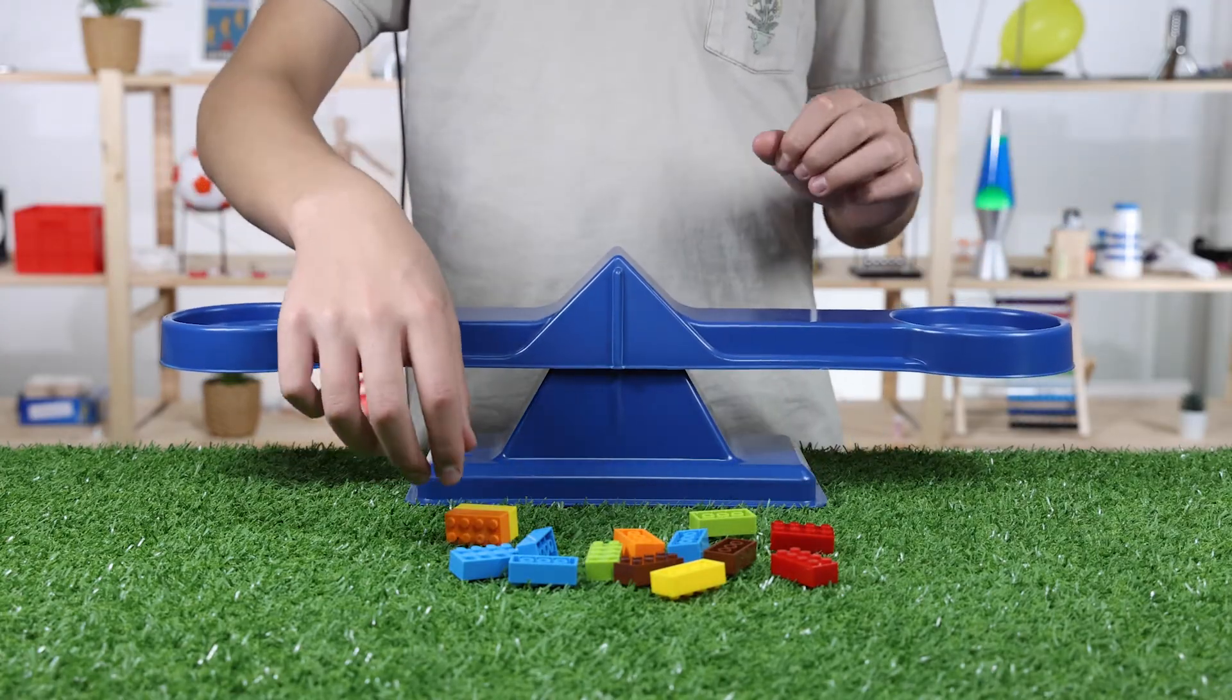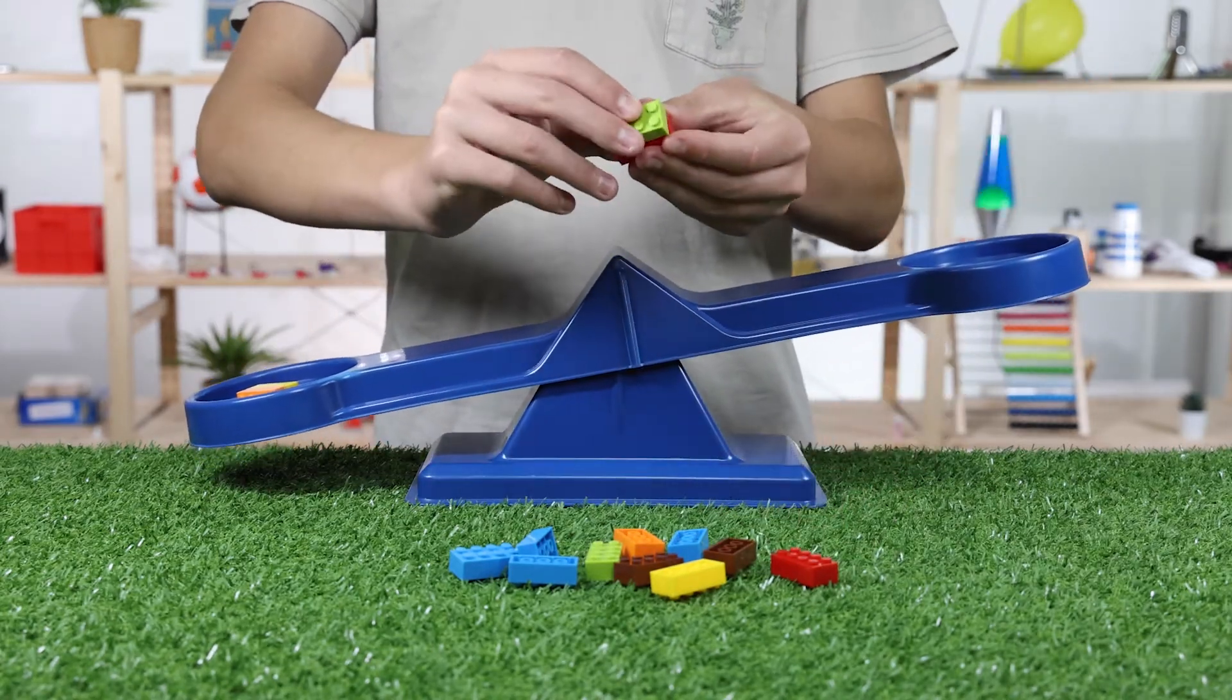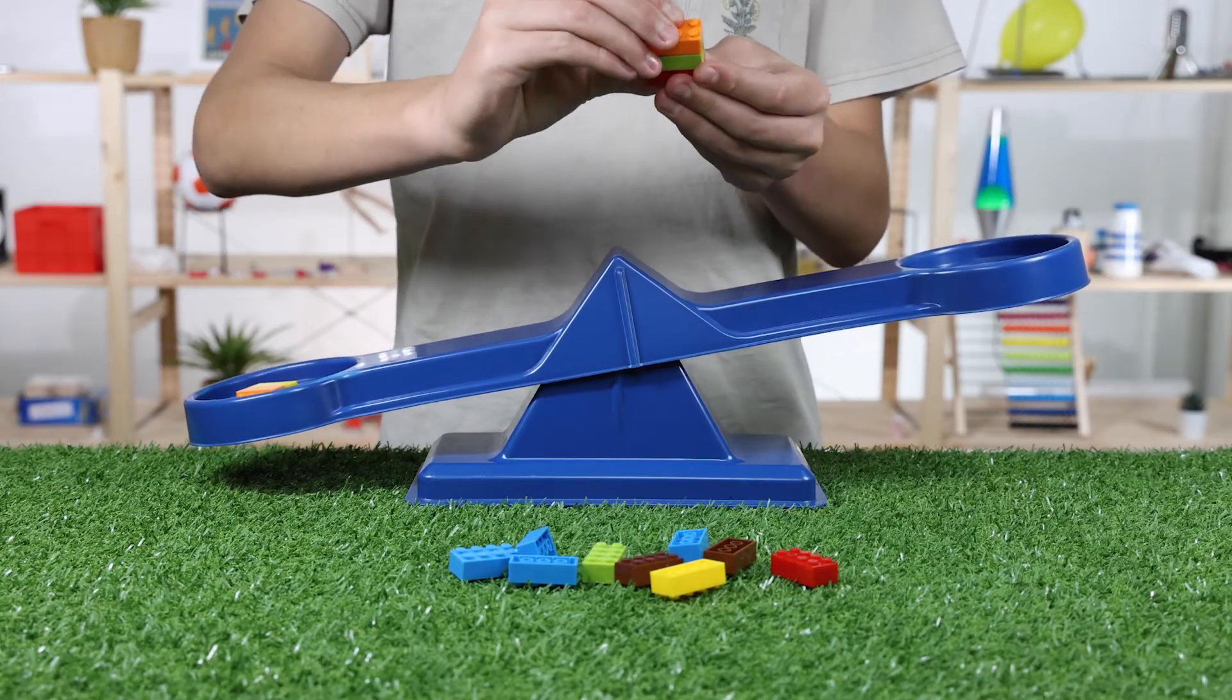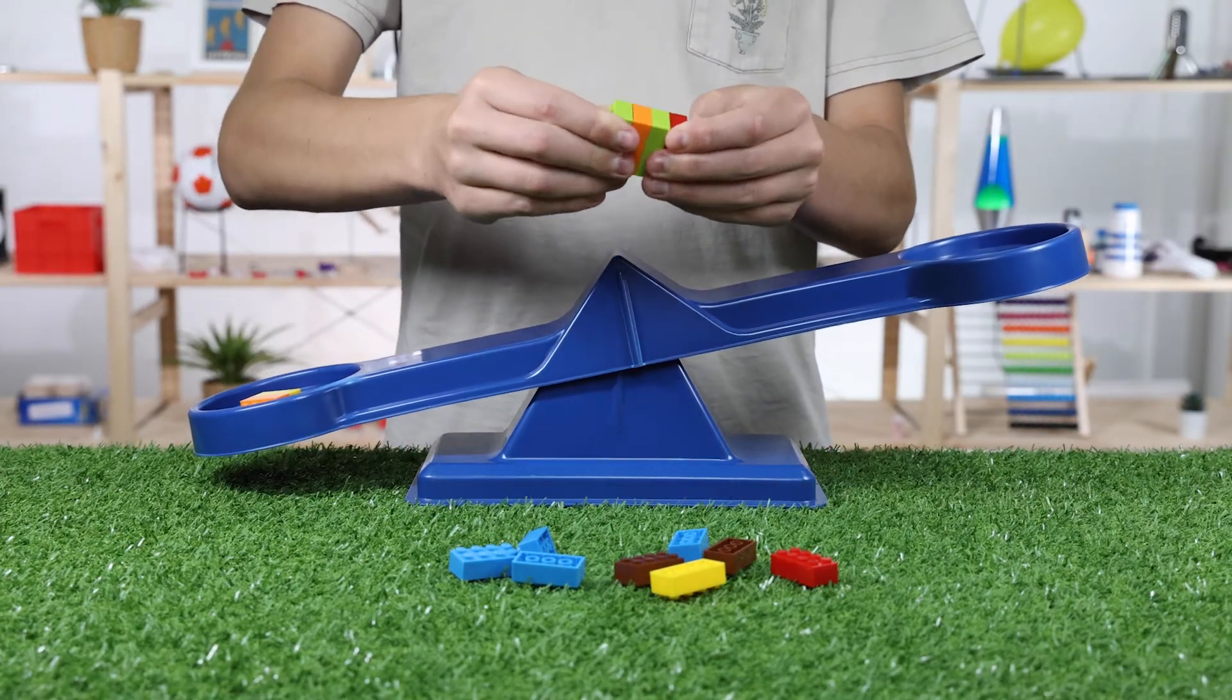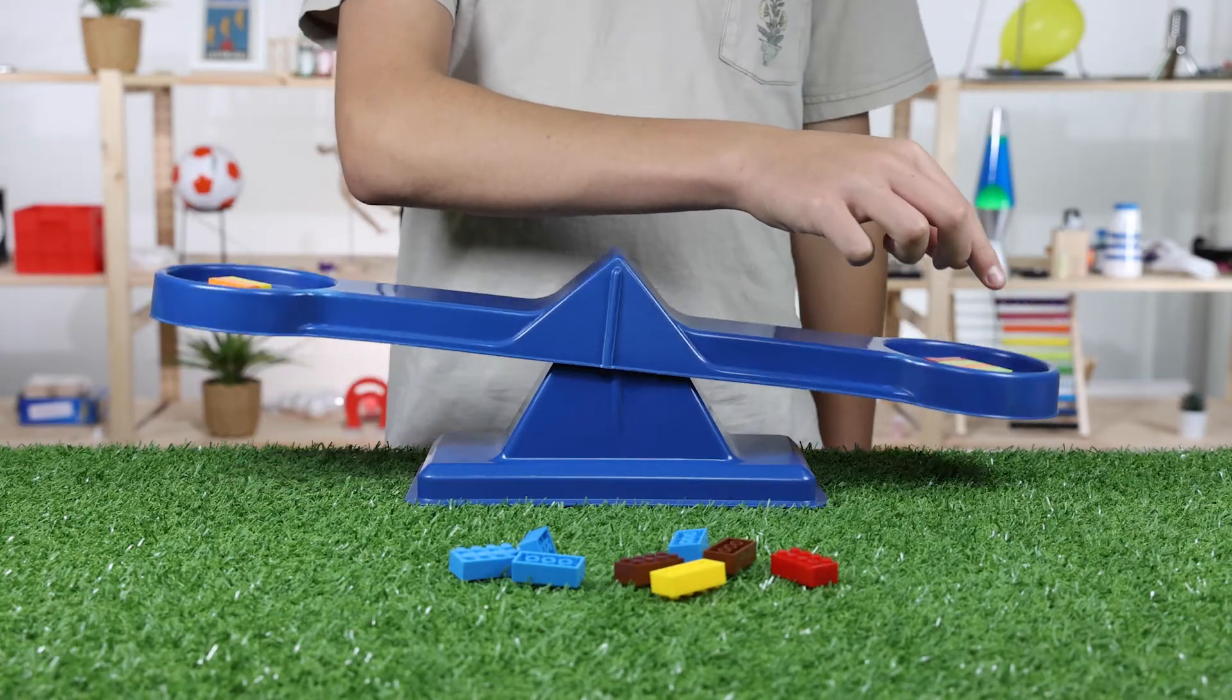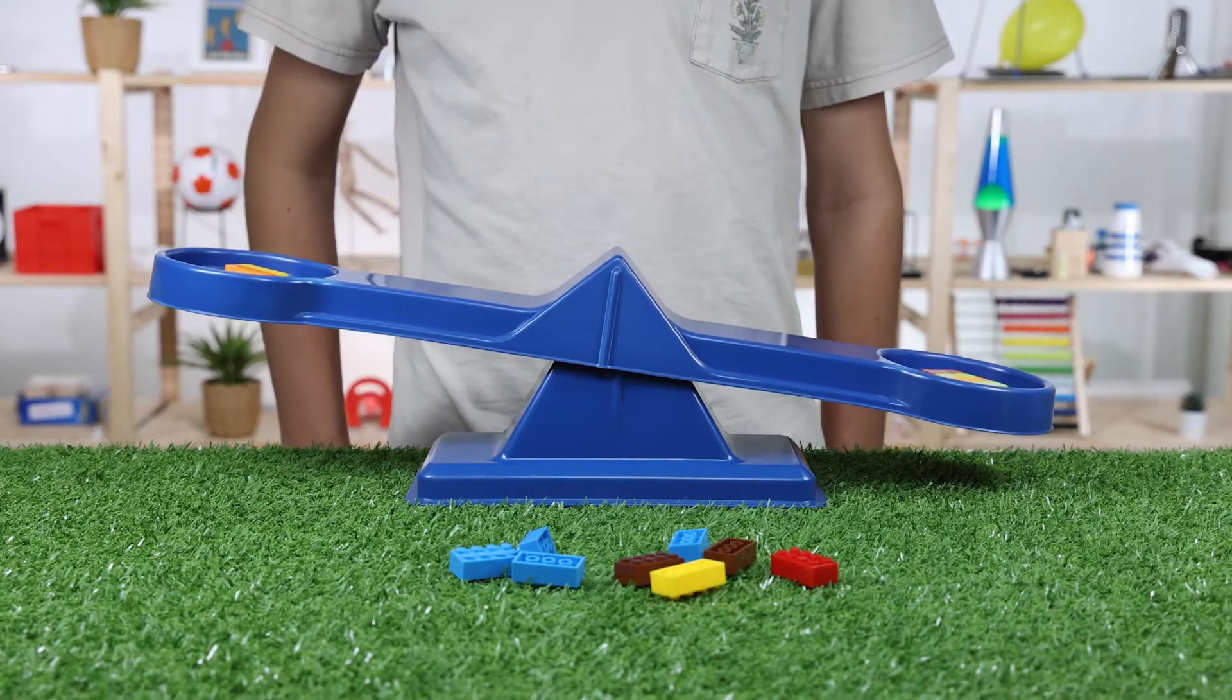Now let's put two blocks on one side of the balance and put four blocks on the other side. Four blocks has a greater mass than two blocks.